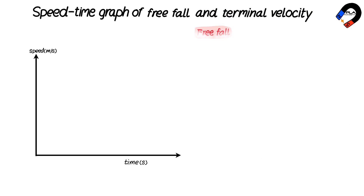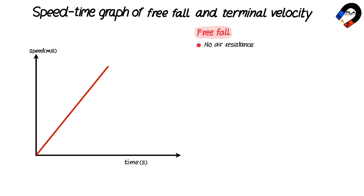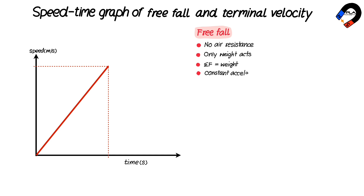The speed-time graph of free fall and terminal velocity. The speed-time graph of a ball moving in free fall to reach the ground, where resistance is ignored, is a straight line that passes through the origin and the gradient is 9.8. Because only the force acting on the ball downward is weight, the resultant force is the weight, giving a constant acceleration of 9.8 meters per second squared.